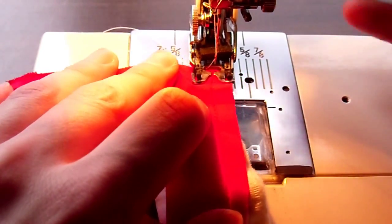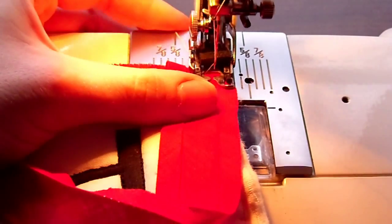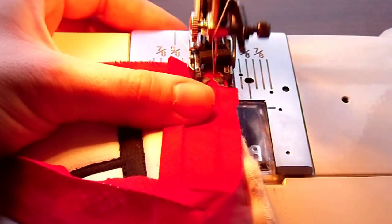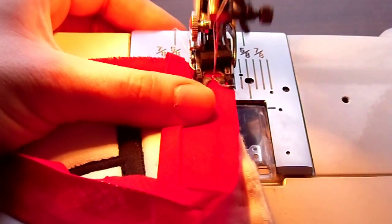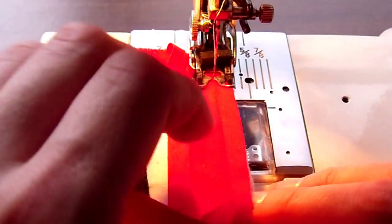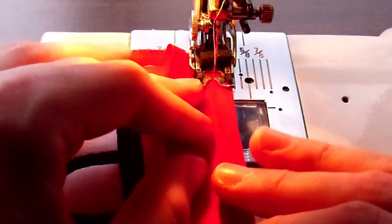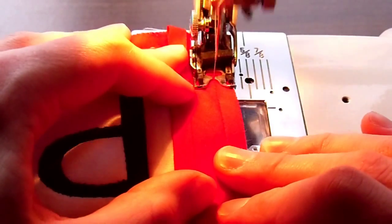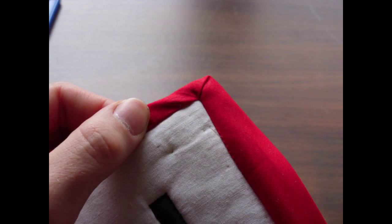Stitch from corner to a quarter inch away from the next corner and repeat around. The mitered corner on the right side should look like this.